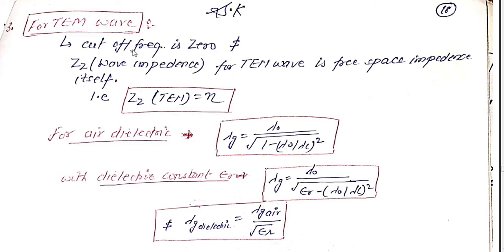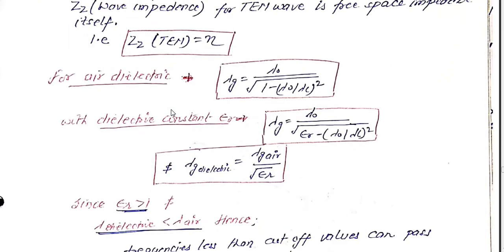At cutoff frequency zero, the wave impedance for the TE wave equals the free space impedance itself. That is why we say the wave impedance for the TE wave equals η at that condition.